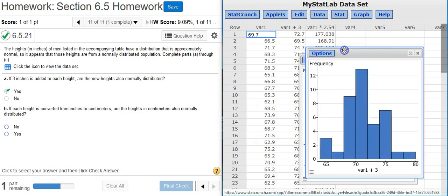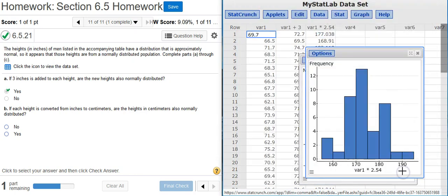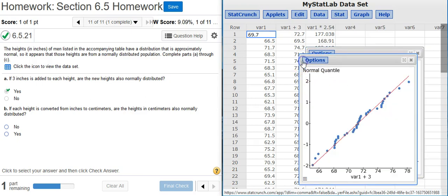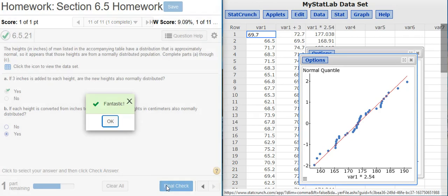I can come back to my histogram, make a new histogram with that newly transformed data. And again, that's looking kind of iffy, but yeah, it might be OK. Let's check out our normal quantile plot with the new transformed data. Yeah, I'd say that's looking OK. So we're going to select Yes. Fantastic!